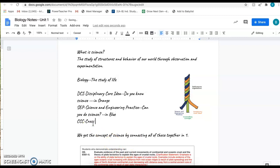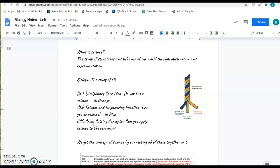Our third one is our cross-cutting concepts. The question that goes along with this one is: can you apply science to the real world? Basically relating it to things that happen in your life, things that happen outside, things that happen within a relationship with different things. Basically applying it to real world situations. Cross-cutting concepts are always going to be in green.